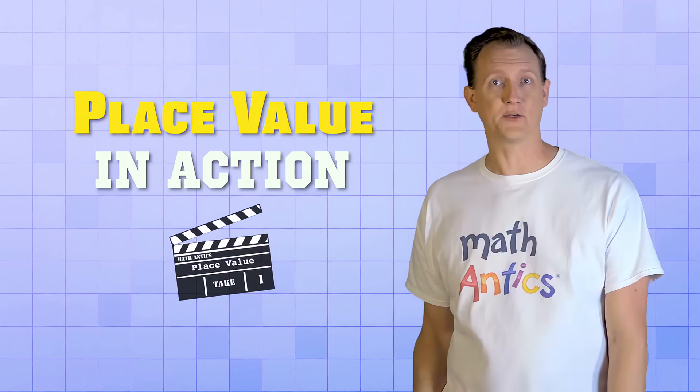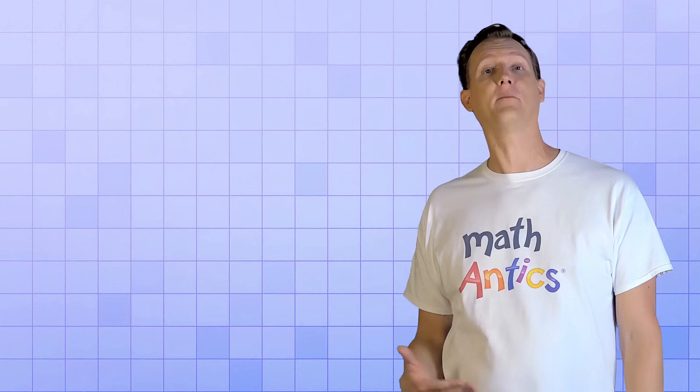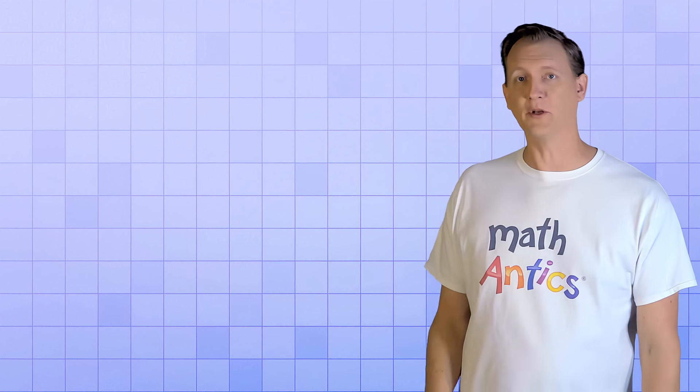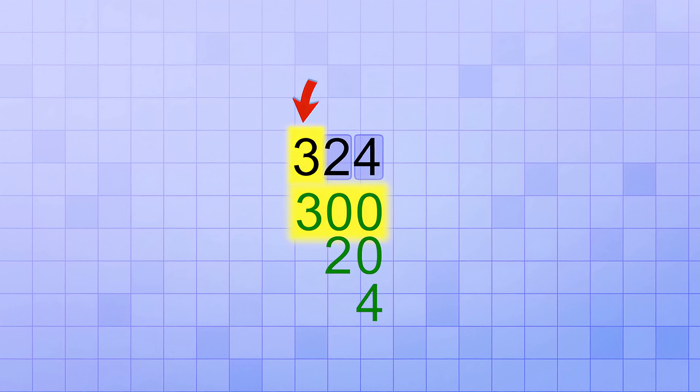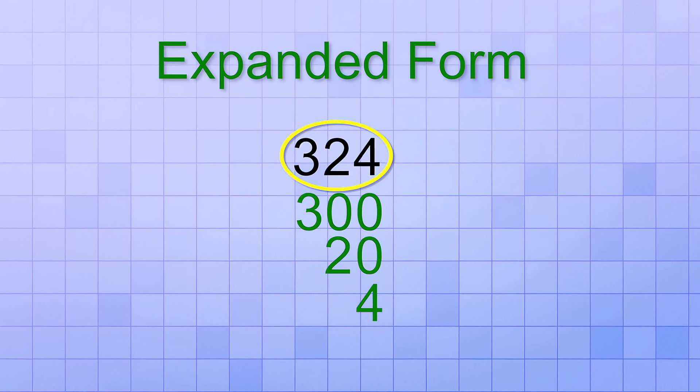Okay, now a great way to see place value in action with some actual numbers is to expand them to show that they're really combinations of different groups. When we do this, it's called writing a number in expanded form. For example, we can expand 324 to be 300, 20, and 4 because the 3 is in the hundreds place and means 300, the 2 is in the tens place and means 20, and the 4 is in the ones place so it just means 4. So 324 in expanded form is the combination of those amounts: 300 plus 20 plus 4.